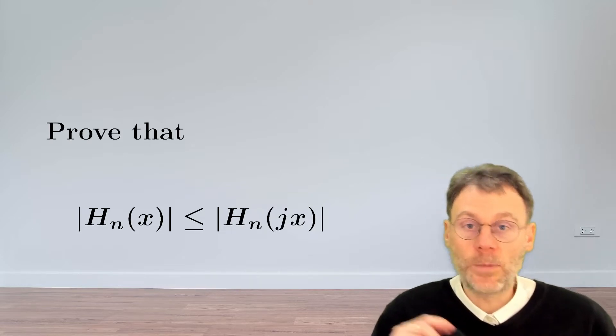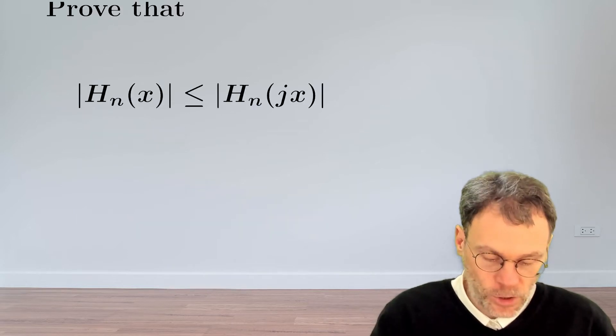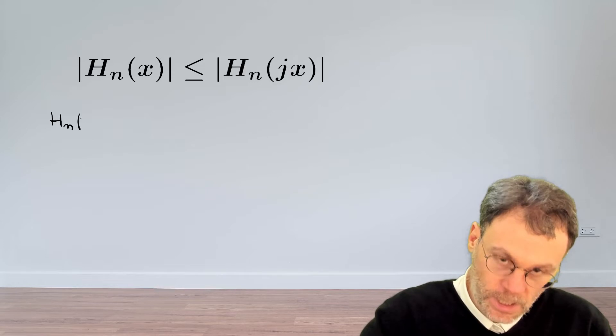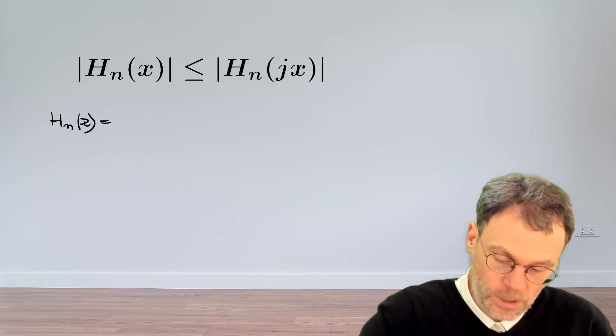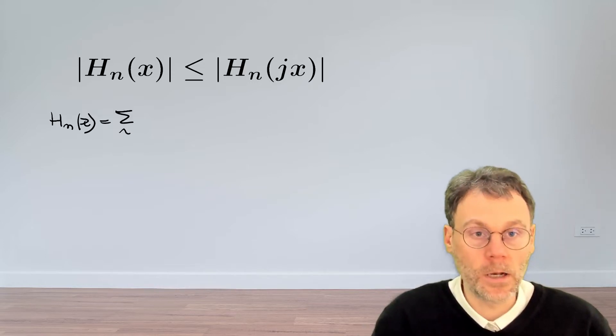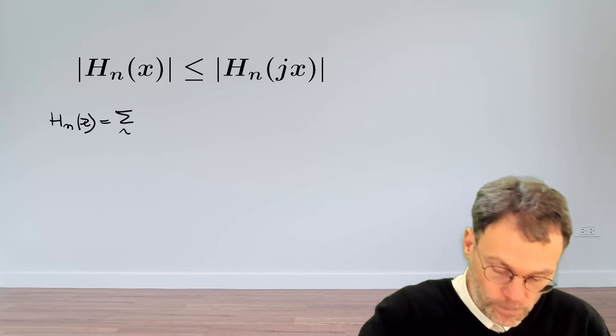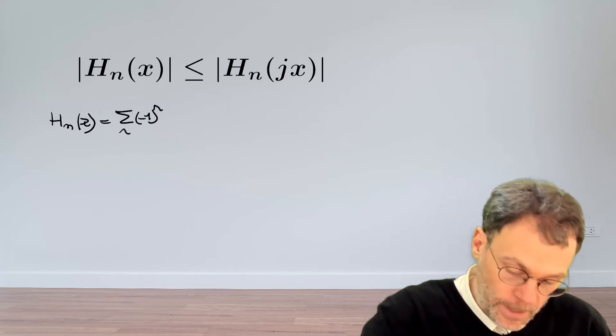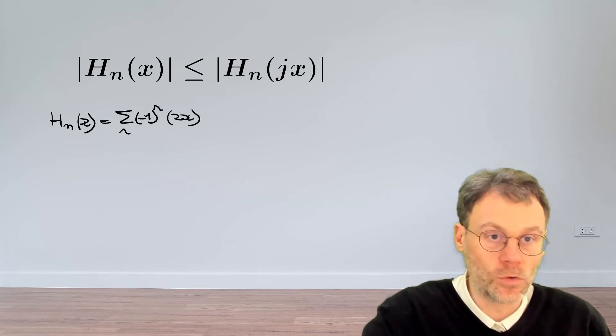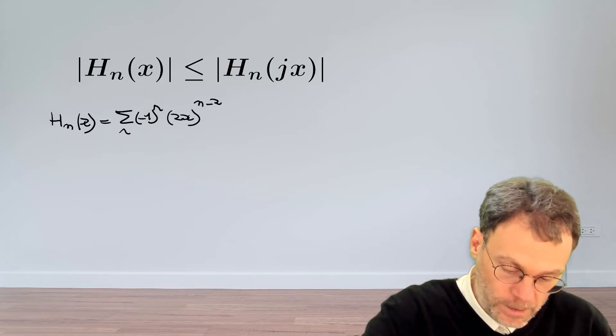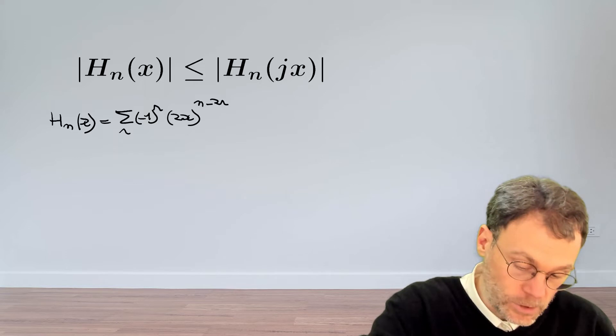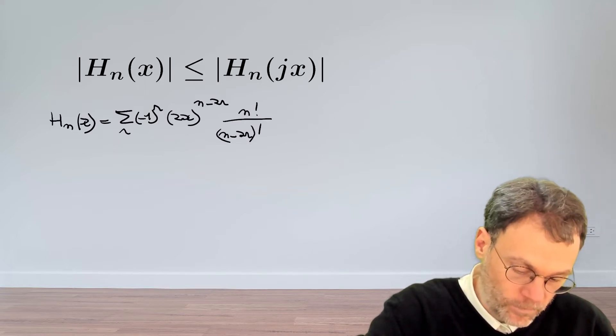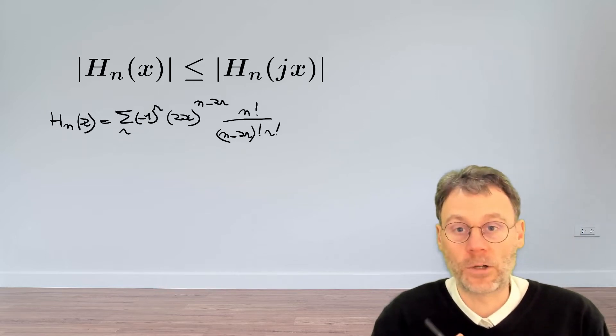We are going to use the explicit form of the series expansion of the Hermite polynomial. So that's going to be for Hn(x), the sum over r, let's not bother about the summation bounds here, minus 1 to the power of r, and then we have 2x to the power of n minus 2r, and then some factorial stuff: n factorial, n minus 2r factorial, r factorial.